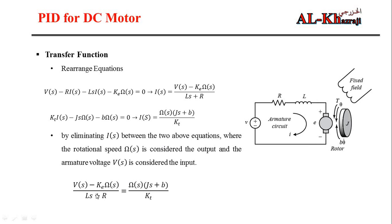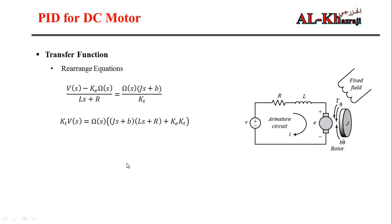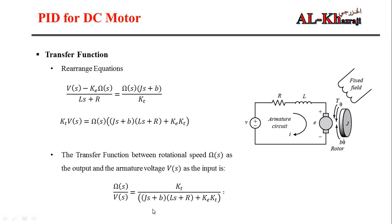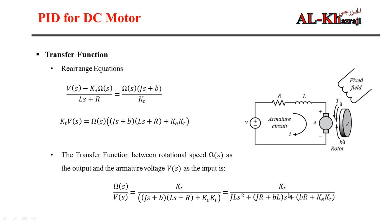Rearranging with the input as voltage and output as omega (rotational speed), we get the transfer function. The final form is organized with the S-squared term as the leading coefficient, followed by the S term, and the constant term. This is the open-loop transfer function of the DC motor that we will use in the MATLAB simulation.